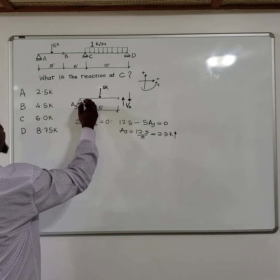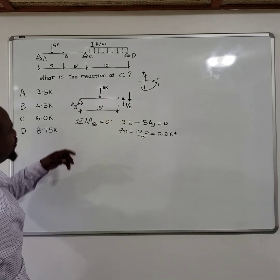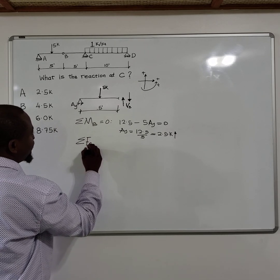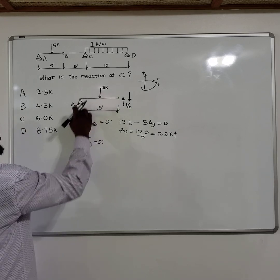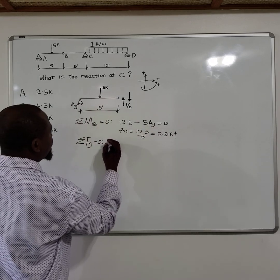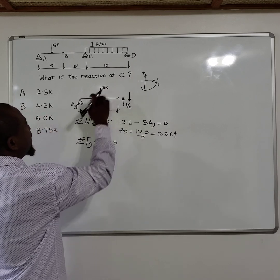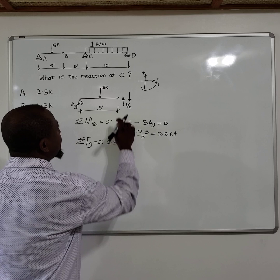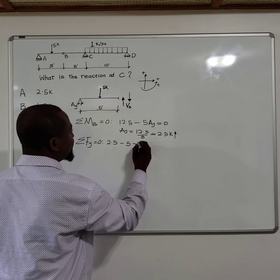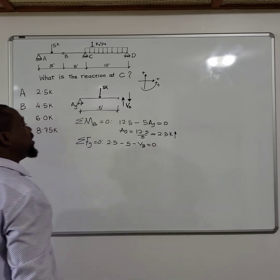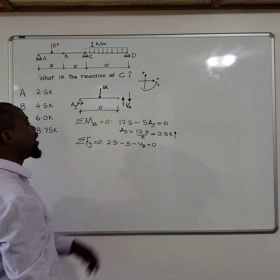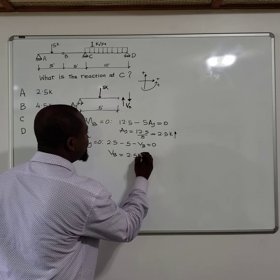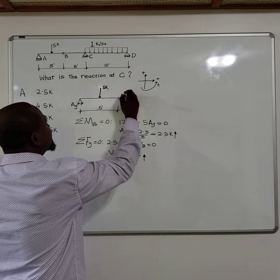So the force here is 2.5. Now you do sum of the forces in the Y direction equals zero. That means 2.5, which is AY, and then we have a 5 kip which comes down, that will be negative, and then VB we don't know. But now we can know it because we have the equation, so VB becomes 2.5 also, 2.5 kips, and also positive. So that means our assumption here is correct that force is going up.